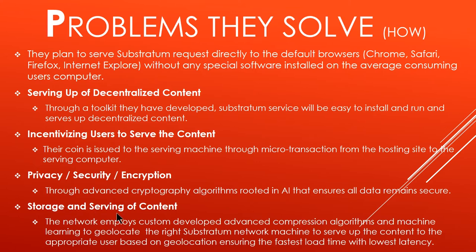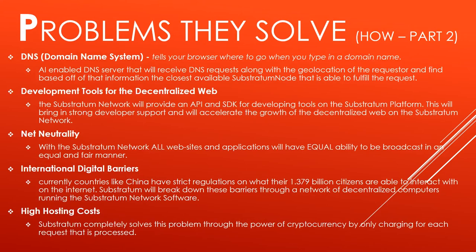For storage and serving of content, the network employs custom-developed advanced compression algorithms and machine learning to geolocate the right Substratum network machine to serve up content to the appropriate user based on geolocation, ensuring the fastest load time and lowest latency. This kind of reminds me of AWS — basically wherever you are located, you will feed off that part of the network to keep latency as low as possible.